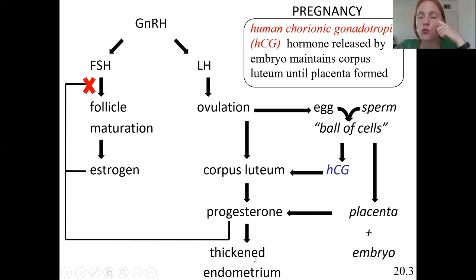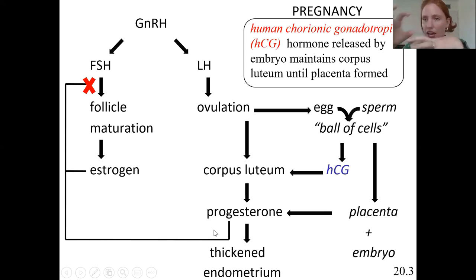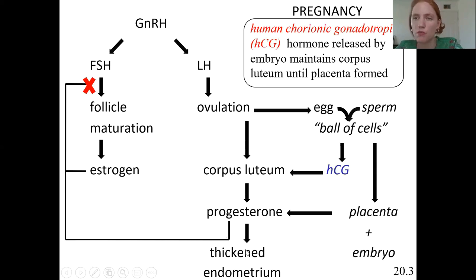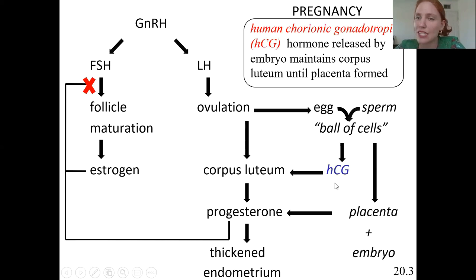Once the embryo is fully embedded, a placenta develops. The placenta produces progesterone, which helps finish off maintaining the pregnancy for the rest of the 40 weeks. The placenta itself produces progesterone to help maintain it.